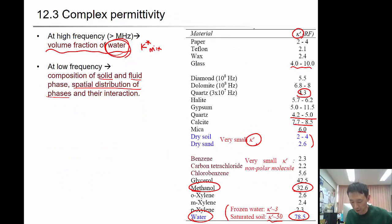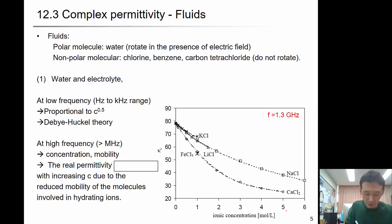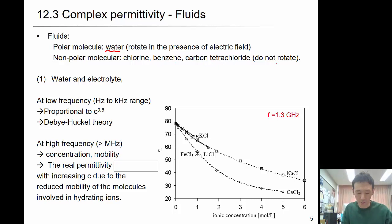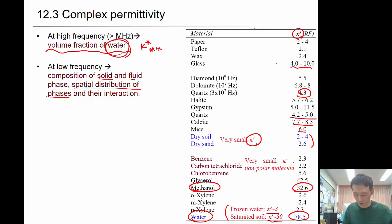The polar molecule is water — it will rotate in the presence of an electric field. Non-polar materials like chlorine, benzene, and carbon tetrachloride do not rotate. So when you look at those values, the kappa prime is really small.